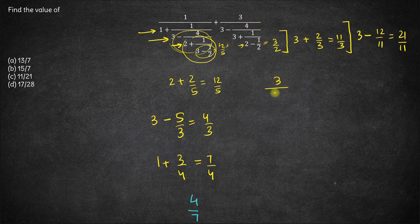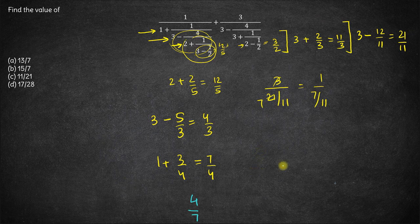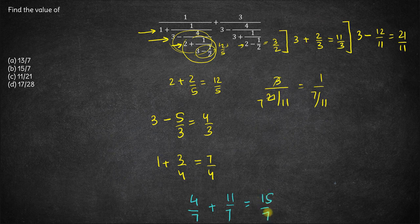And finally we have 3 upon 21/11. So 21 goes by 3 seven times. So we have 1 upon 7/11, which effectively becomes 11/7. So the final answer: this expression is 4/7 and this is 11/7. So this comes out to be 15/7. The sum of both these expressions is option B, 15/7.